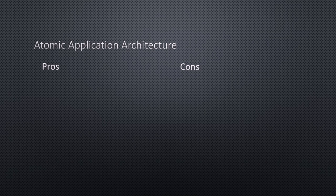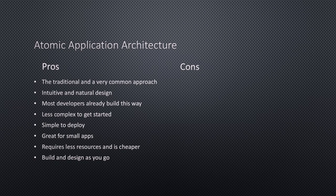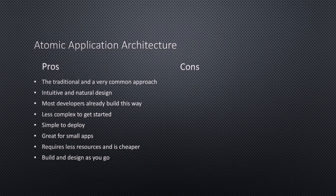Let's talk about atomic apps — the pros and cons of choosing that as your architecture. One of the nice things about atomic apps is that it's kind of the natural or instinctive way of building an app, and most developers have a lot of experience building this way. One thing to focus on is that it requires less resources and is cheaper. With just one application on one server, if you split into a lot of different microservices, you need to be conscious of the expense that could incur.